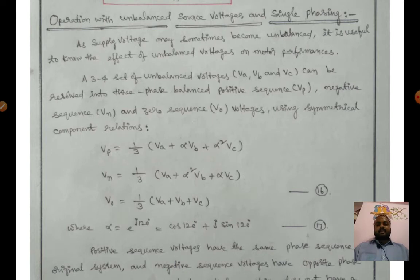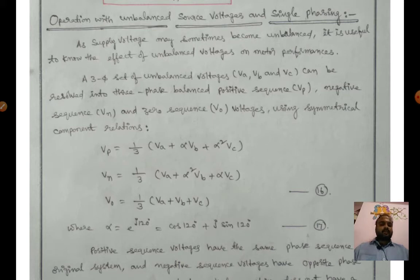A three-phase set of unbalanced voltages — Va, Vb, and Vc — can be resolved into three-phase balanced positive sequence, negative sequence, and zero sequence voltages using symmetrical component relations.